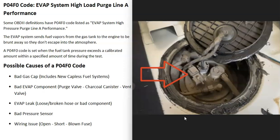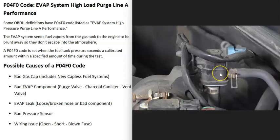If you get a P0452 alongside this code, it's a good idea to test that pressure sensor to see if it's gone bad. Fuel tank pressure sensors can be located on the fuel pump, on top of the gas tank, or with the charcoal canister — the exact location varies by vehicle.